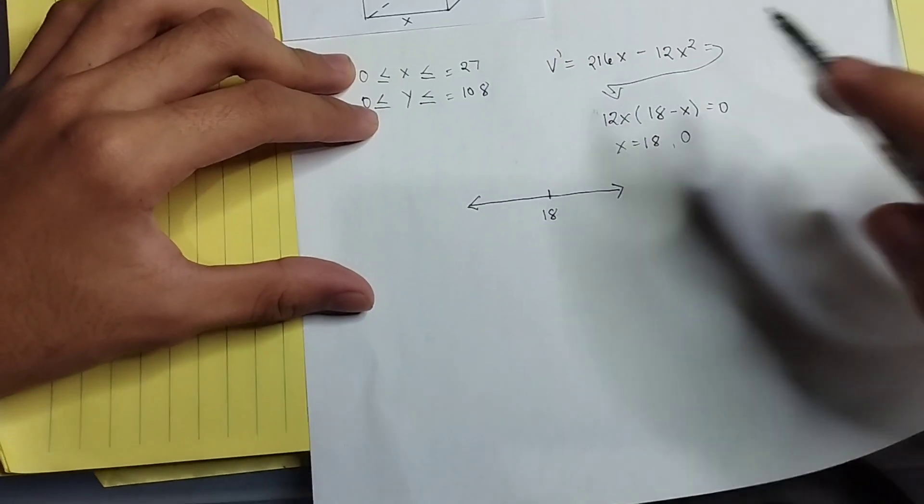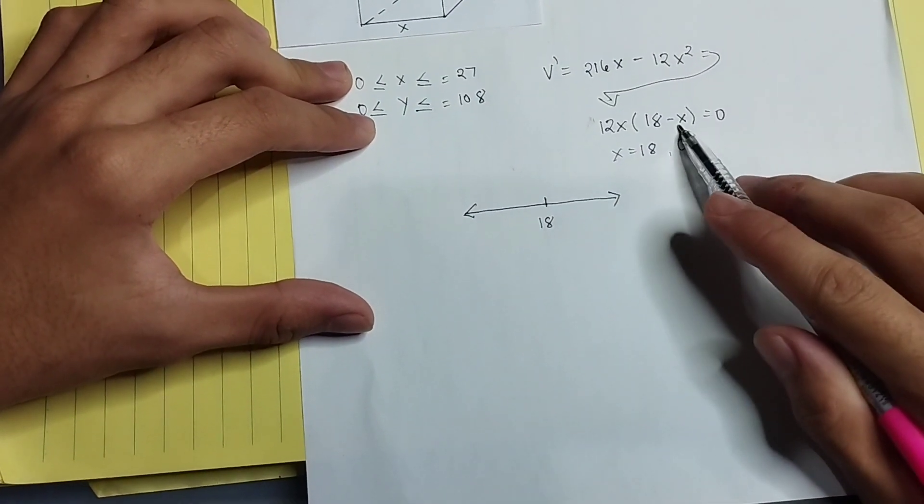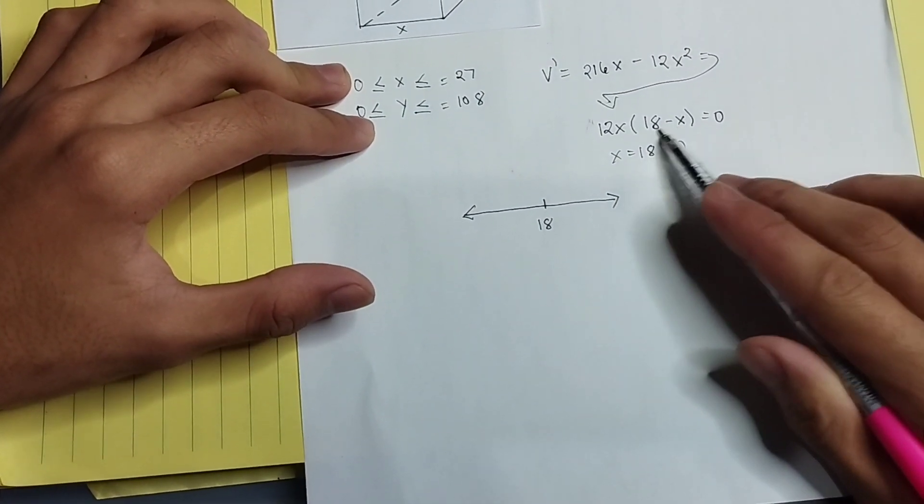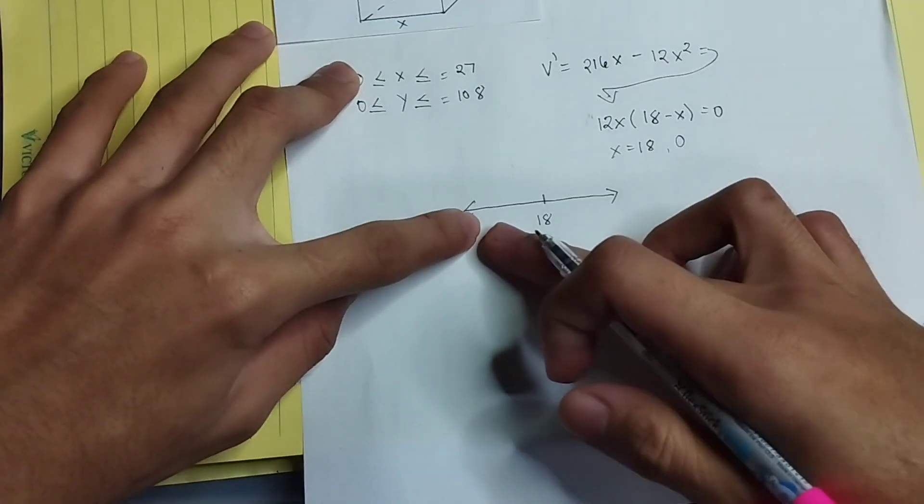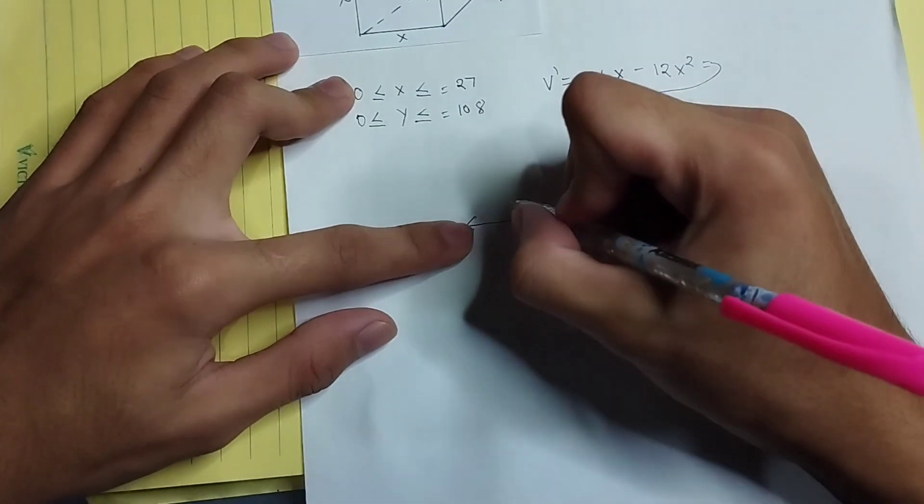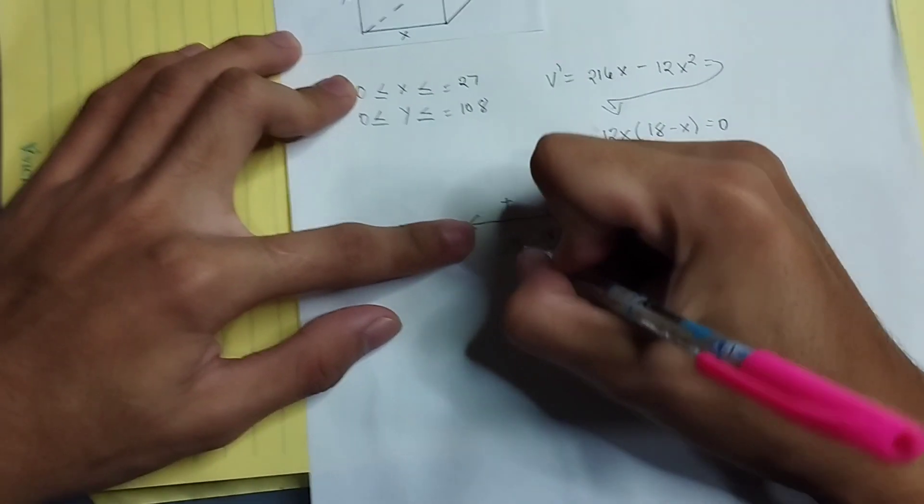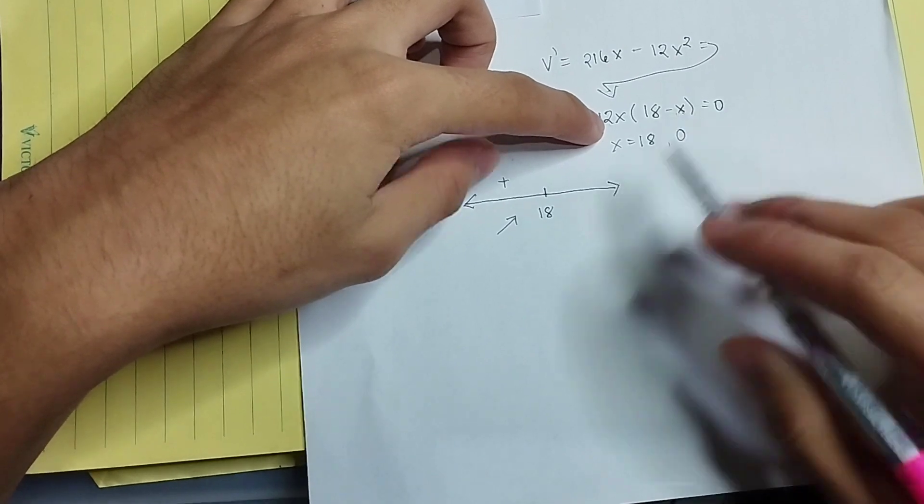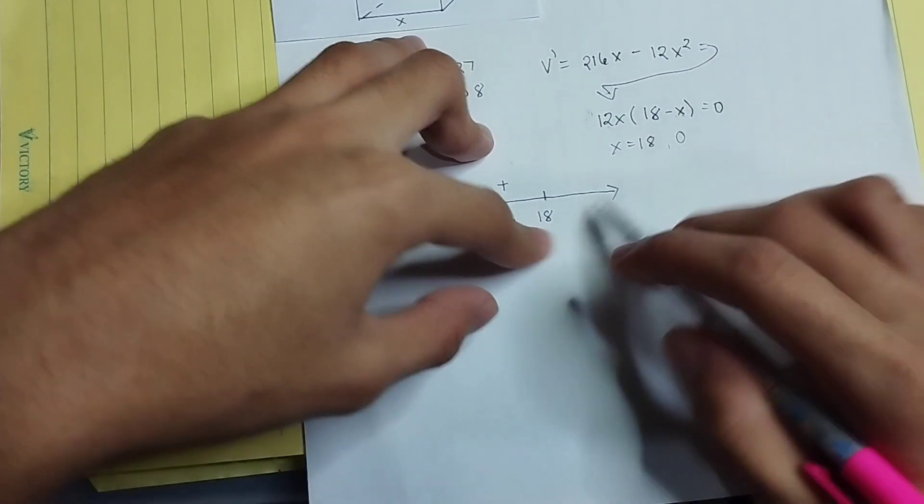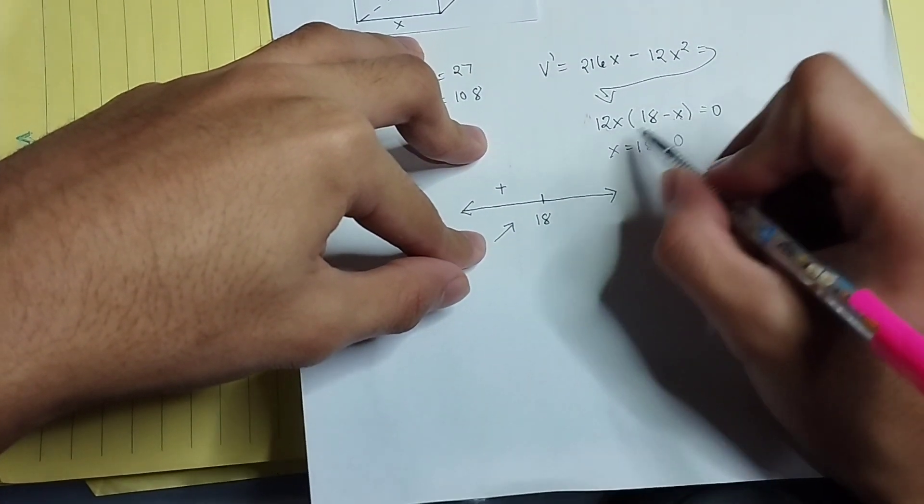And then, for example, if we plug in 17 in the left side, it will give us a positive value times positive value, which is increasing. And then if we substitute 19 in the right side value, it will give us negative times positive, which gives us decreasing value.